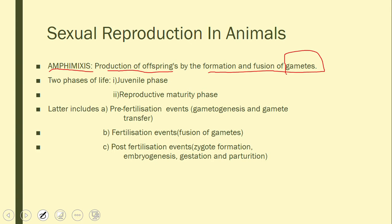In life there are two phases. The first is the juvenile phase — the phase after birth where physical growth is occurring. Once physical growth is complete, the next phase begins: the reproductive maturity phase, which involves the growth and maturity of the sex organs.